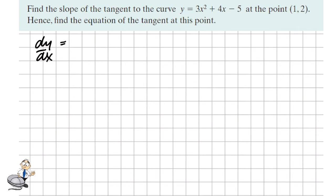So the slope of the curve is found by finding the derivative. We multiply by the power and reduce the power by 1. So the derivative is 6x + 4.